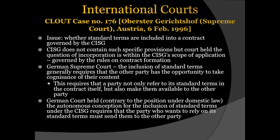An example of the interpretation of the CISG in international courts is CLOUT Case Number 176. The issue was whether standard terms — including standard forms and boilerplate provisions — are included in a contract governed by the CISG. The CISG does not contain specific provisions on this, but the court held that the question of interpretation is within the CISG scope of application because it is governed by the rules of contract formation. The German court held that, contrary to the position under domestic law, the autonomous conception for the inclusion of standard terms under the CISG requires that the party who wants to rely on its standard terms must send them to the other party. The justification equates to the fact that standard terms generally deal with questions covered by the CISG — namely the rights and duties of the parties.